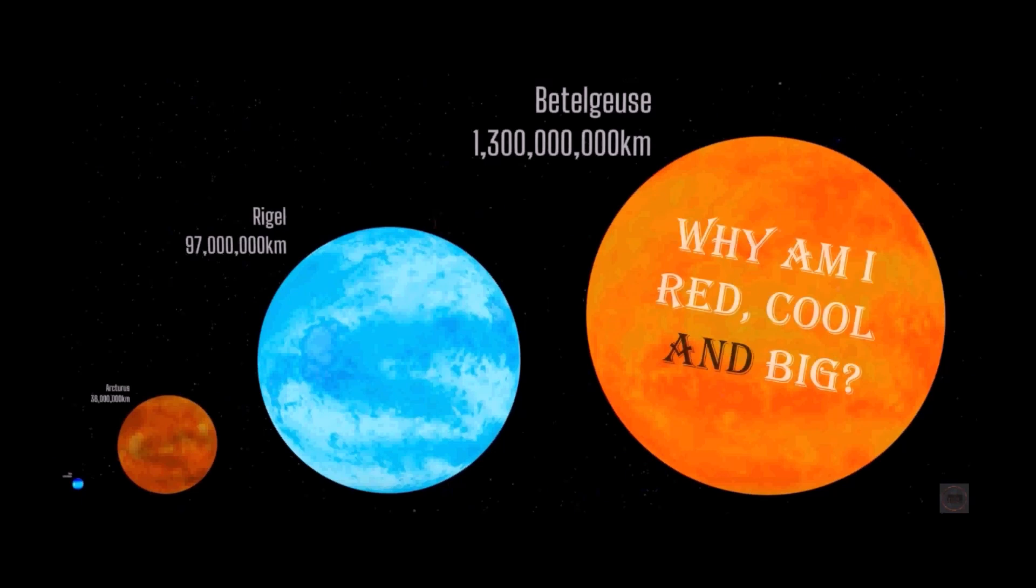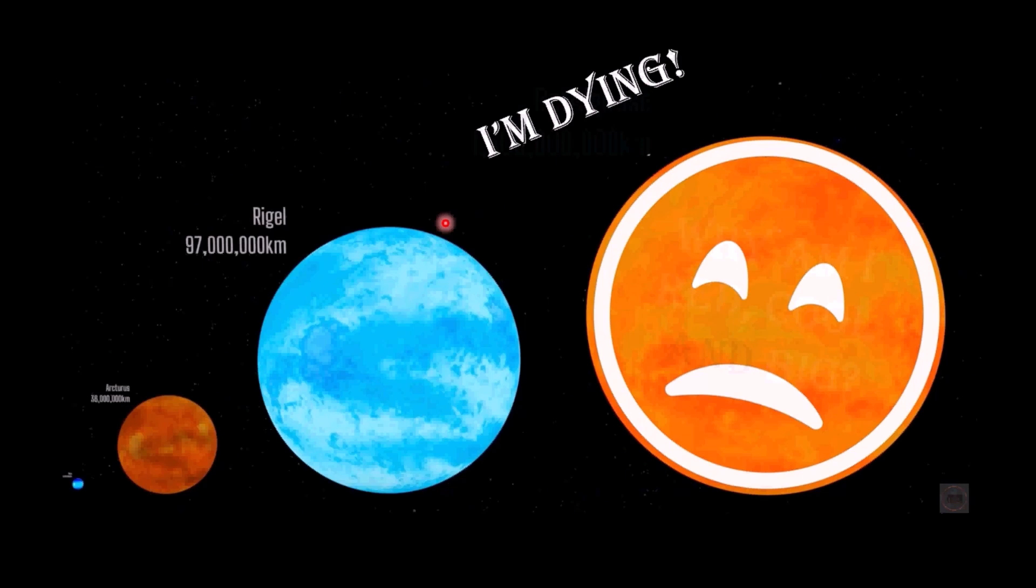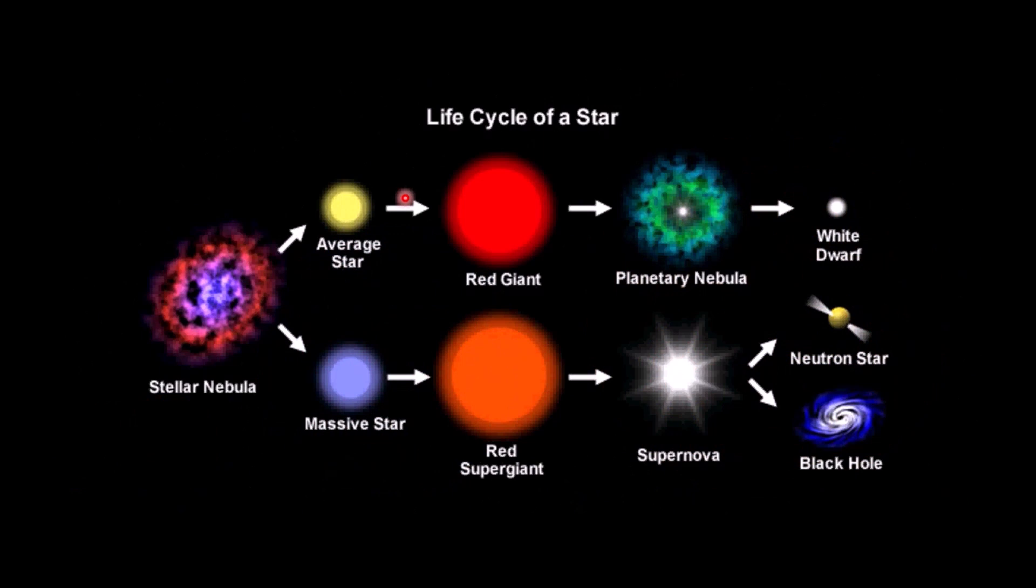But that, of course, then leads to question, why is Betelgeuse red, cool, and big? That kind of goes against what we just learned. Betelgeuse should be small if it's red, right? Well, the answer is Betelgeuse is dying. Betelgeuse is on its last kind of legs here in stellar life, which is going to lead us to exactly that topic.